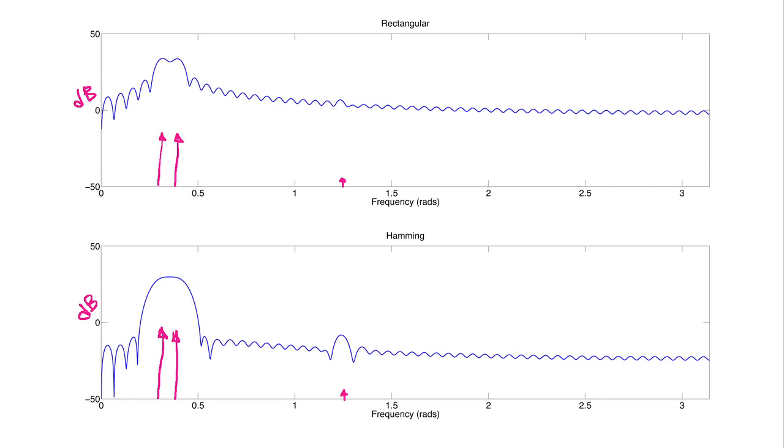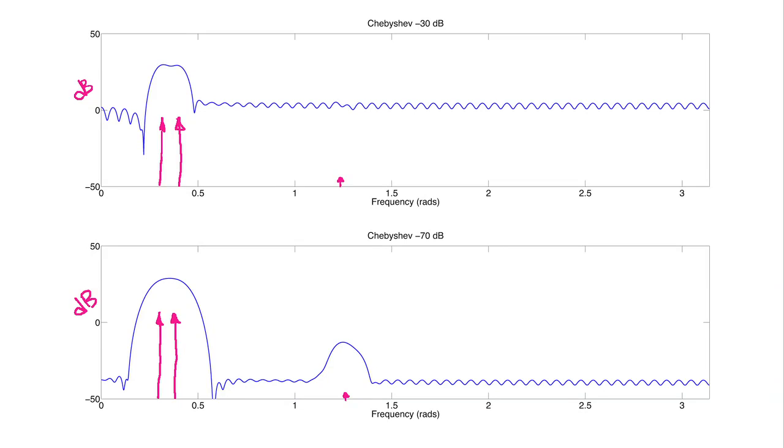We get a similar effect with the two Chebyshev windows. With the side lobes at minus 30 dB, the dynamic range is insufficient to identify the weaker sinusoid in the presence of these strong ones. The strong ones create enough of a shadow, if you will, with their side lobes that it just hides the weak sinusoid.